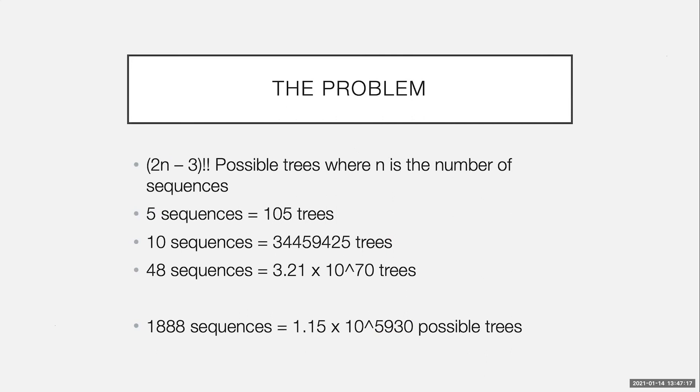And this is how quickly it escalates. And it's (2n - 3)!! possible trees where n is the number of sequences. So here, the last one I have is just shy of 2000 sequences. That is the current size of the Ebola data set from West Africa. And it's almost an unimaginable number already.